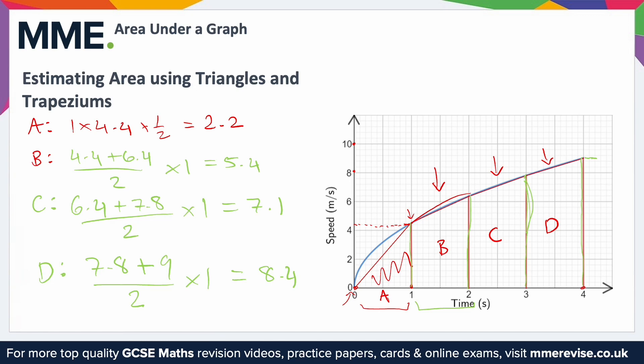Now all we need to do is add those up. So we're going to do 2.2 plus 5.4 plus 7.1 plus 8.4. Adding all of those up gives us 23.1.